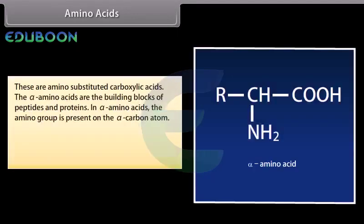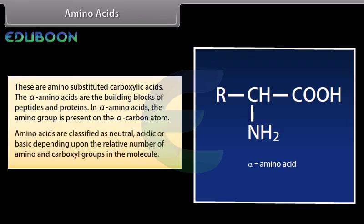Amino acids are amino-substituted carboxylic acids. The alpha amino acids are the building blocks of peptides and proteins. In alpha amino acids, the amino group is present on the alpha carbon atom. Amino acids are classified as neutral, acidic or basic depending upon the relative number of amino and carboxyl groups in the molecule.